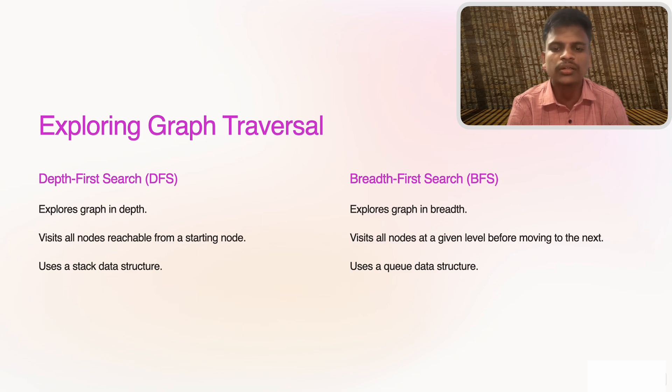Next, Breadth-First Search (BFS): this explores all nodes at the current level before moving to nodes at the next level. A practical example would be if you were looking for all your immediate friends first, then friends of friends, and so on. BFS uses a queue, which is ideal for exploring nodes level by level.